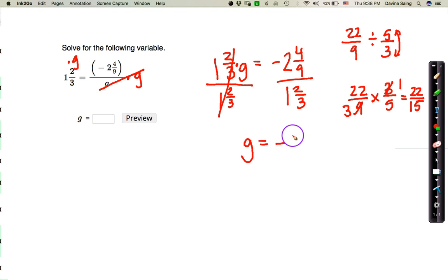Here, I already put my sign as negative, so that's great. So we have negative 22 fifteenths. Now, before I claim that this is my answer, you know that it's going to be a good idea to check your work. So I'm going to go ahead and check my work right here.